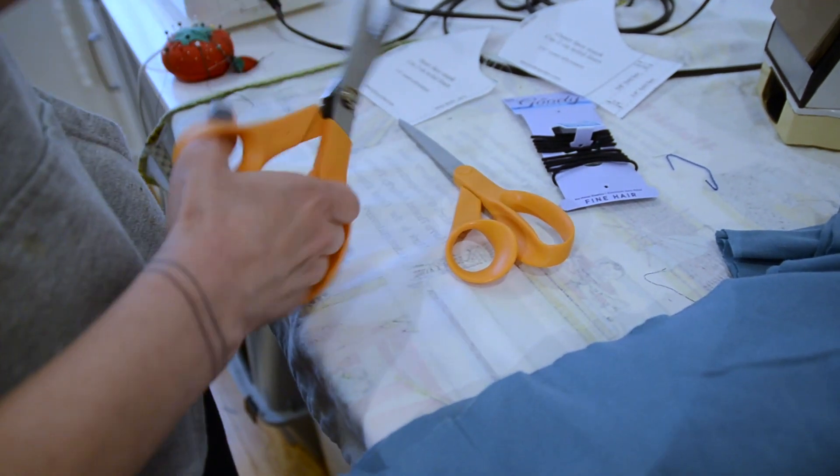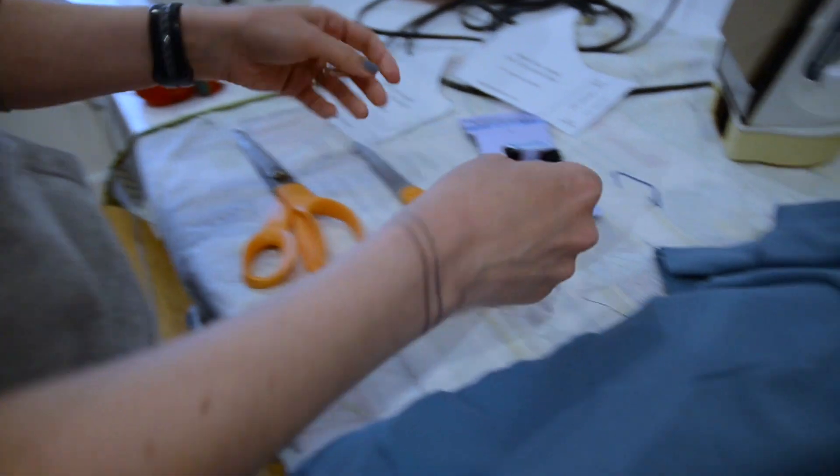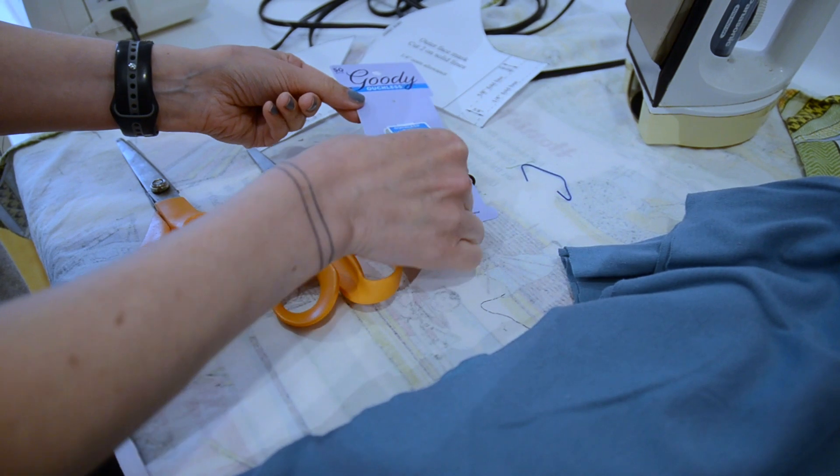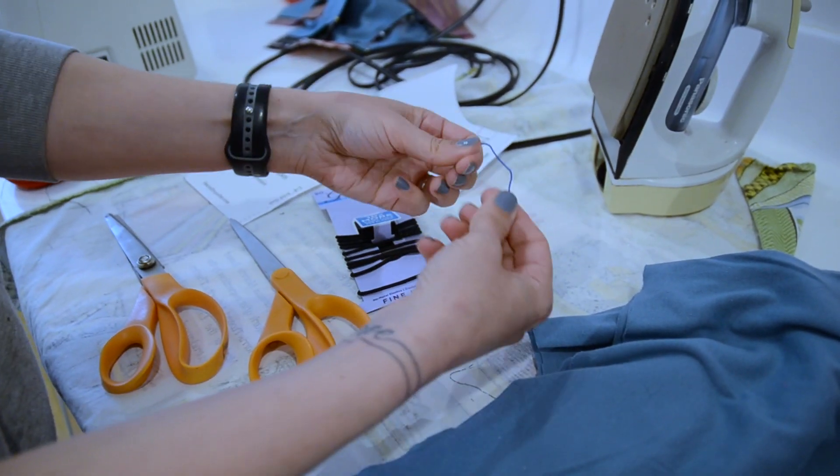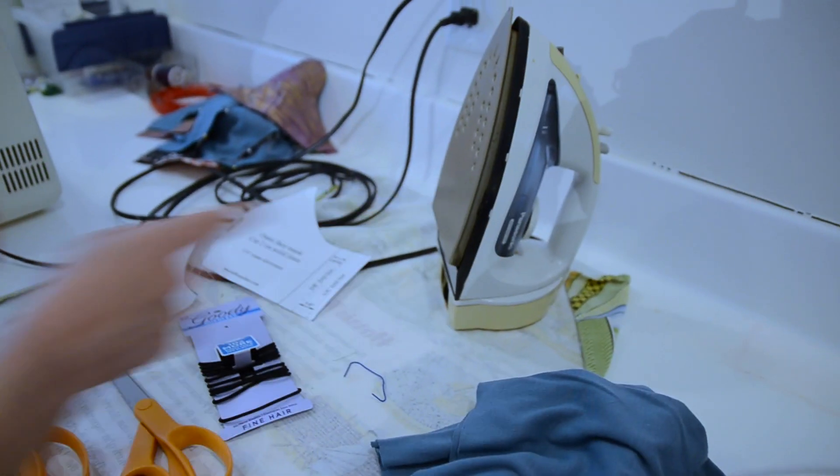Scissors. Pinking shears if you've got them. If not, regular shears will work. Hair elastics. You'll need two, one for each side. A paper clip or bendable wire. A hot iron. Sewing machine. And your pattern.